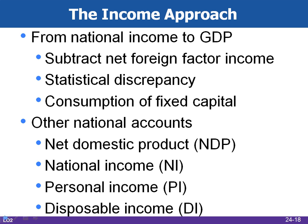The other national accounts provide useful information about the economy's performance. Net domestic product is gross domestic product less consumption of fixed capital. National income is net domestic product, less the statistical discrepancy, plus the net foreign factor income. Personal income includes all income received, regardless of whether it is earned or unearned. And finally, disposable income is personal income less personal taxes.